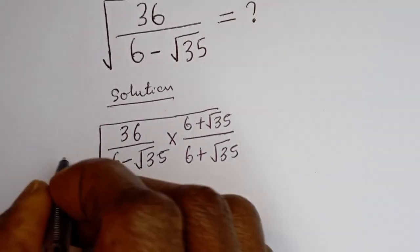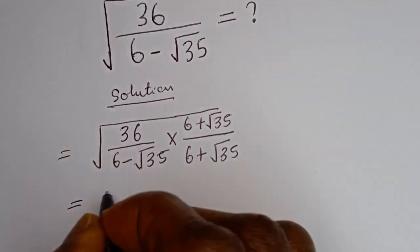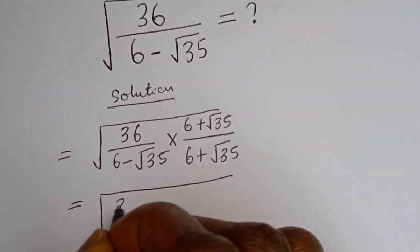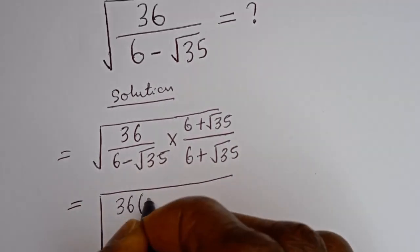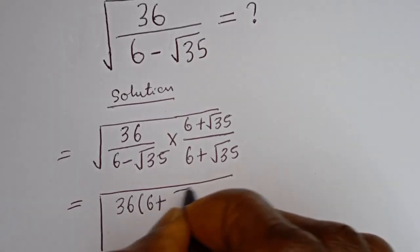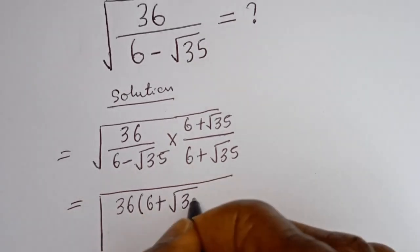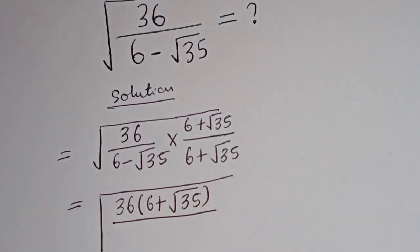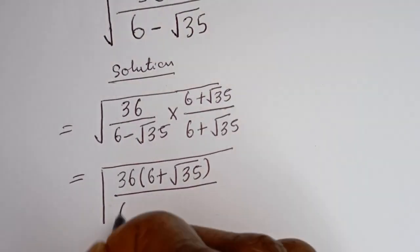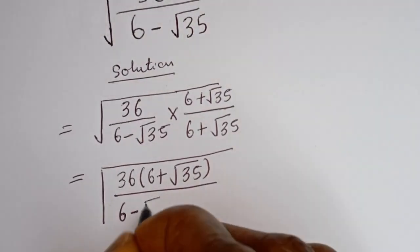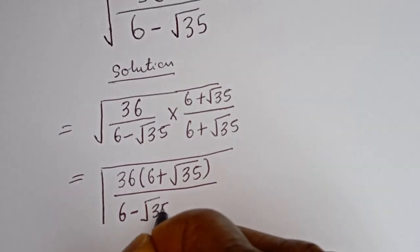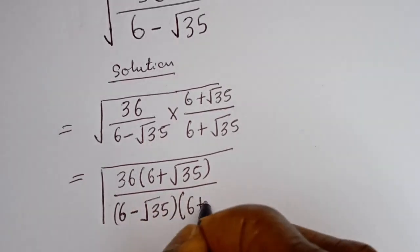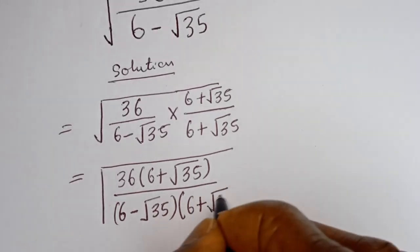And this is equal to square root of 36 bracket 6 plus square root of 35, divided by 6 minus square root of 35 bracket 6 plus square root of 35.